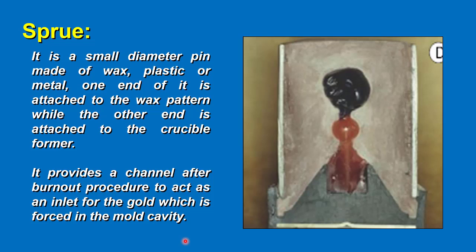Coming to the sprue: it is a small diameter pin made of wax, plastic, or metal. One end is attached to the wax pattern, while the other end is attached to the crucible former. It provides a channel after the burnout procedure to act as an inlet for the molten alloy which is forced into the mold cavity.